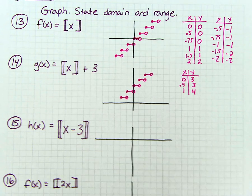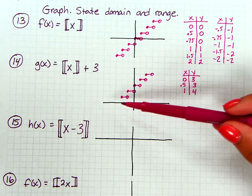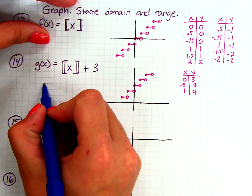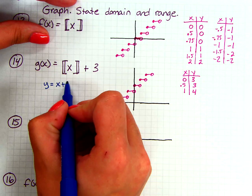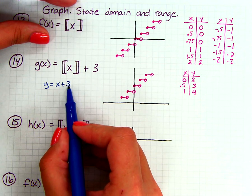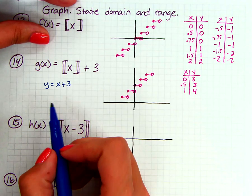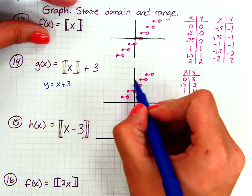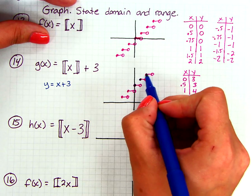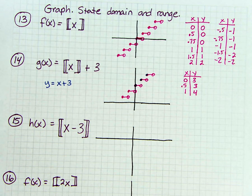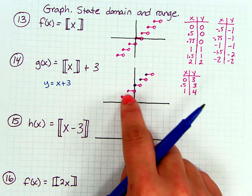Looking at the solid dots, they follow a very similar pattern to what we're used to seeing. If we think of this as y = x + 3, we go up 3 on the y-axis for our starting point, and the slope is 1 — so up 1, over 1 gives the next solid dot. We can graph the solid dots just like a linear line using slope, then figure out the segment length before placing the open circle.